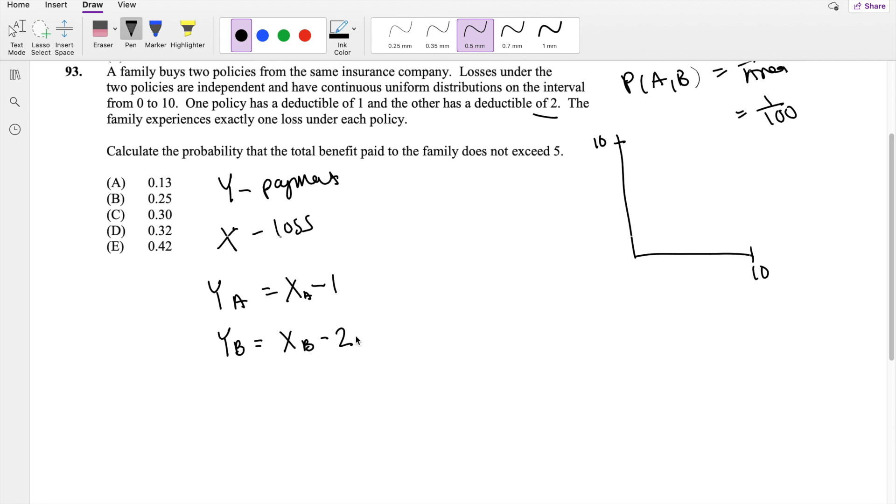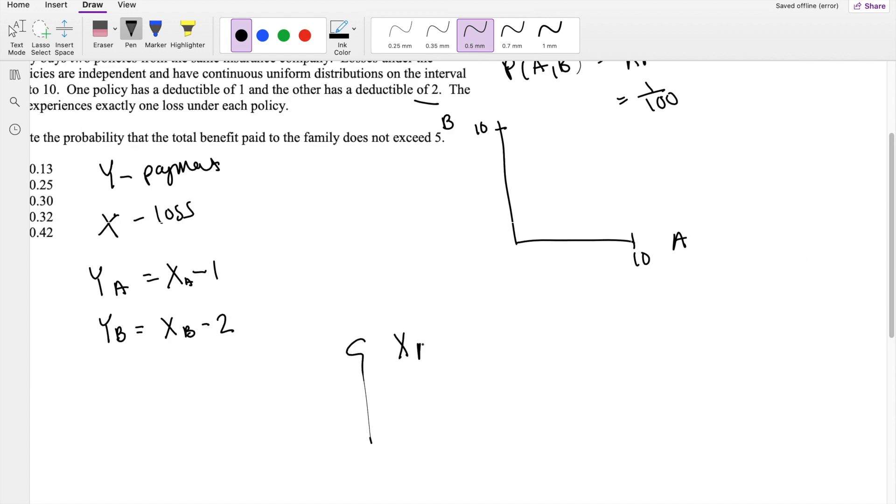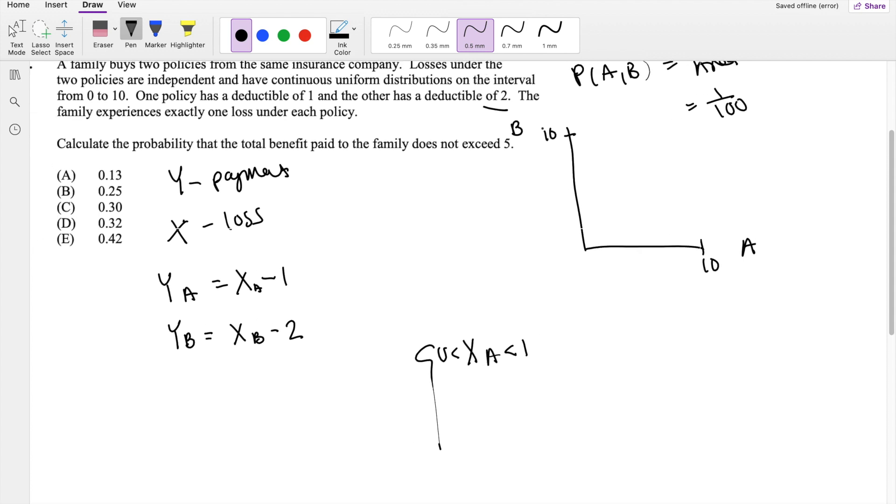And then they ask, calculate the probability that the total benefit paid to the family does not exceed 5. So let's say this is A and then this is B. If the loss of A is between 0 and 1, then if the maximum amount is 5, then Y_B